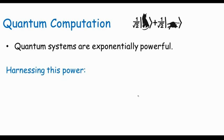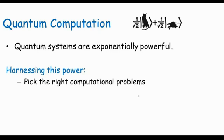But now of course the difficulty lies in harnessing this power and there are several challenges we'll speak about in this course. First we have to pick the right computational problems. Not every computational problem can be sped up by quantum computation. Probably the most famous example of a computational problem that can be sped up is what's called the factoring problem where you're given a number n and you want to factorize it into its prime power factors.